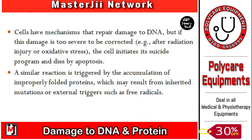Now we will see damage to DNA and proteins. When cells are damaged, the cell will try to repair it. But if the damage is very severe and cannot be properly repaired, the injury becomes irreversible. Most irreversible injuries occur due to radiation injury or oxidative stress. When DNA is damaged, the cell will initiate a programmed cell death — apoptosis.